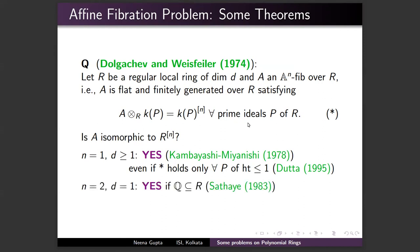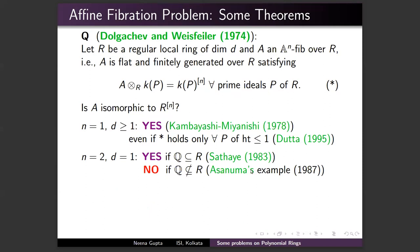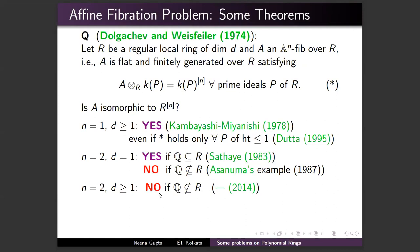For n = 1 the answer is affirmative for any dimension d — proved by Kambayashi and Miyanishi. My supervisor Professor Datta showed that for an 𝔸¹-fibration it suffices to assume the fiber condition on primes of height ≤ 1. For n = 2 and d = 1 (so R is a discrete valuation ring), Sathaye proved that if R contains the field of rational numbers, any 𝔸²-fibration is a polynomial ring. Asanuma showed that without this condition — when R does not contain ℚ — an 𝔸²-fibration need not be a polynomial ring.